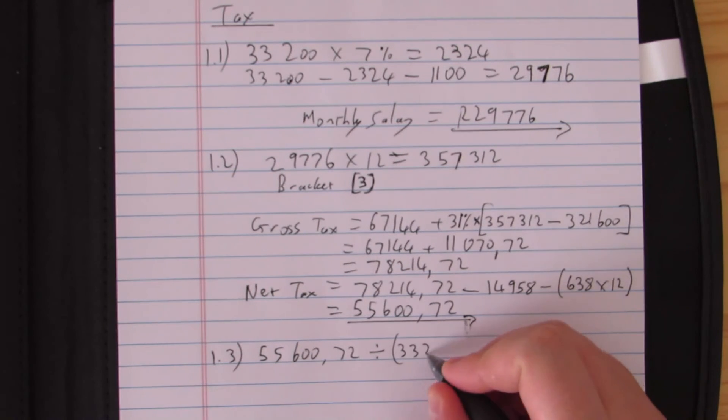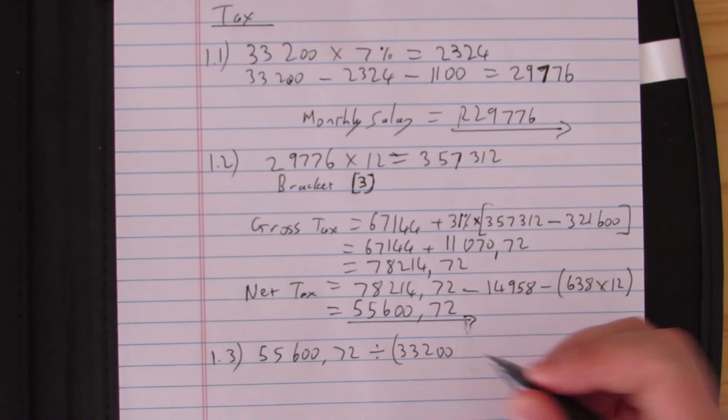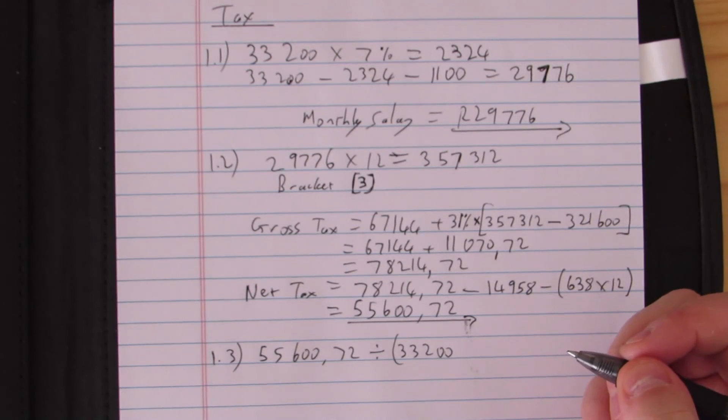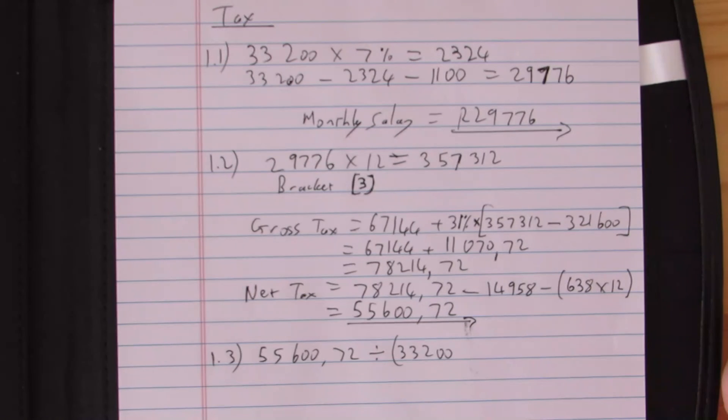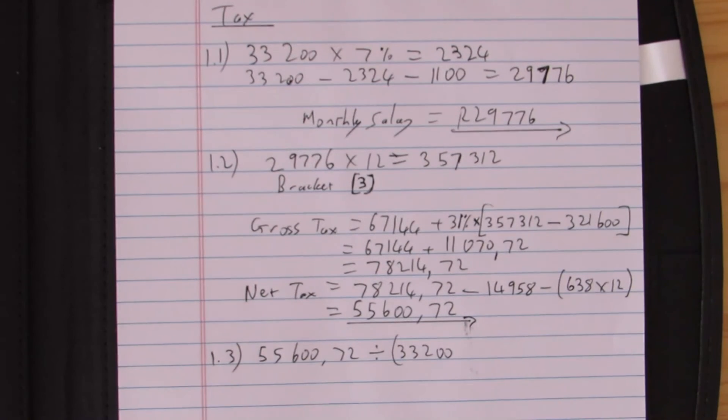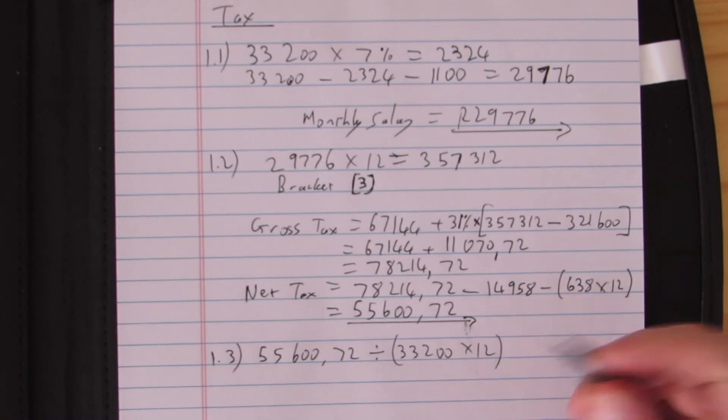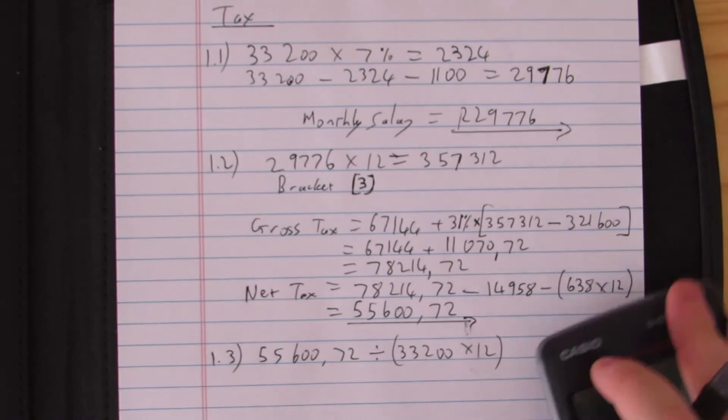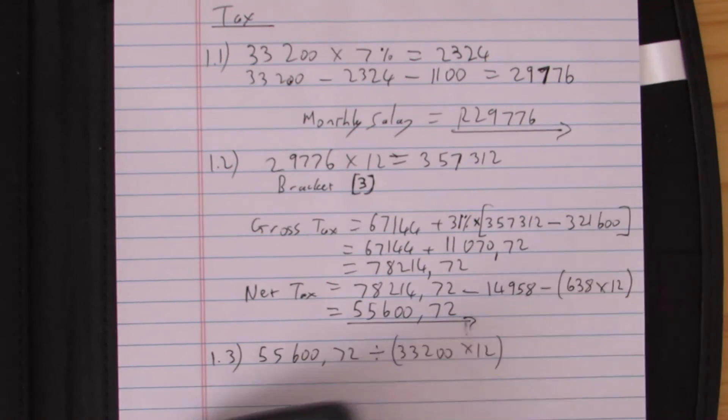Gross income would mean the amount before any deductions or anything else like that. So we're going to have to work that out. He earns 33,200 rand per month before deductions. That would be the gross income because it doesn't say anything about the percentage of income before tax or whatever. Gross income is gross salary. We multiply by 12.